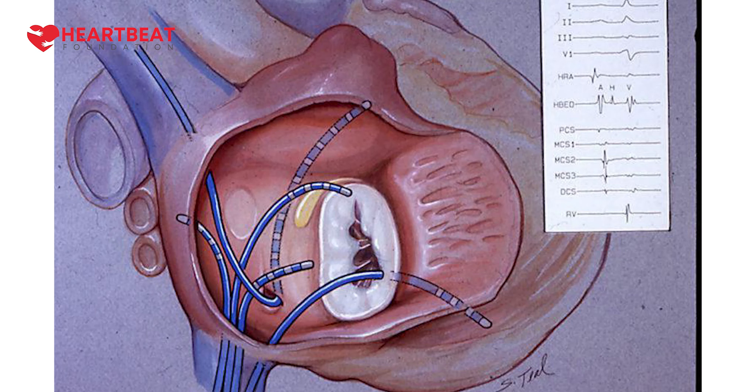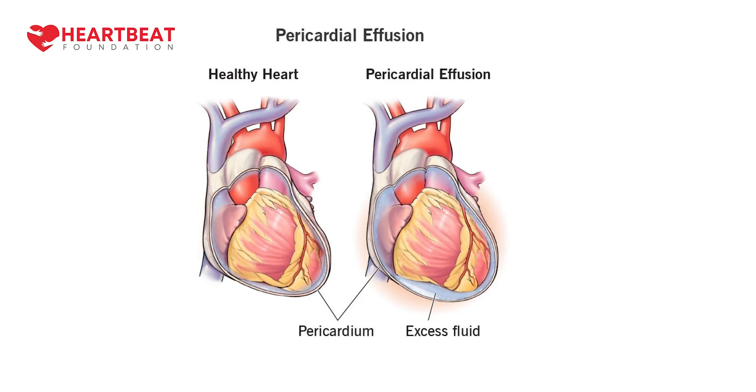Secondly, these catheters are positioned inside the heart, and the heart is always a moving structure — it is never stopped. These are somewhat stiff catheters, and sometimes they can poke the chamber wall. If the chamber wall is thin, it can be perforated. We call this pericardial effusion or pericardial tamponade. This is also an uncommon and very rare complication.